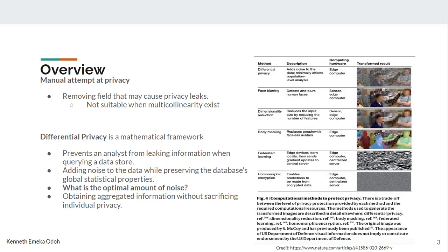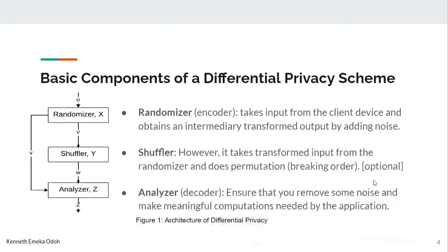To achieve a certain layer of privacy, or even to define your privacy, differential privacy provides a scheme to achieve that. It allows you to add noise, but what's the optimal amount of noise that can obscure the data? If you look at this image, for instance, the better privacy added some noise — you could still see the image of the person — but the morphed one, you see the noise is like a stream so you can't see anything.